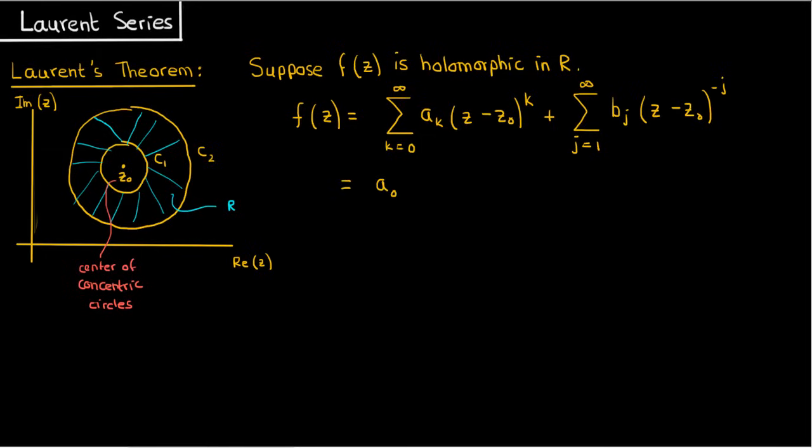With Taylor's series, you only have the polynomial part whenever you expanded a real function around some point. With Laurent series, however, you also have the rational part, the part with the negative powers.